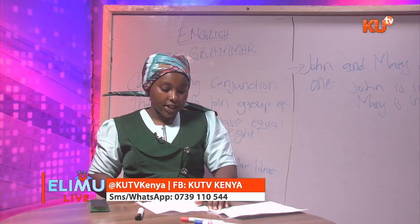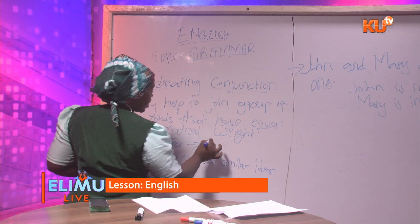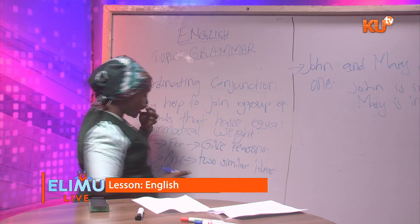'For' is a conjunction that gives reasons. It is used to give reasons. For example, you can have a sentence like 'I was punished for I was late.'